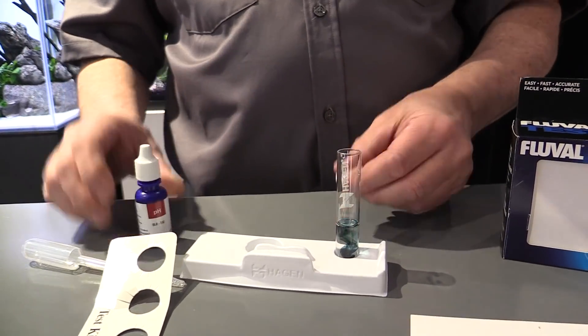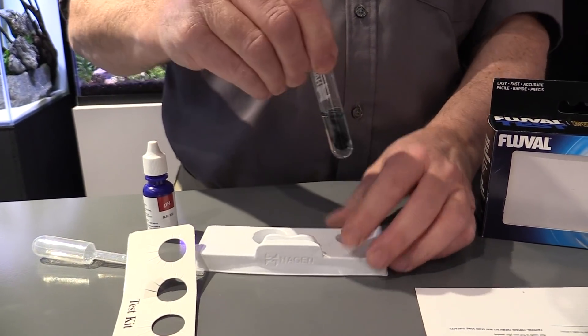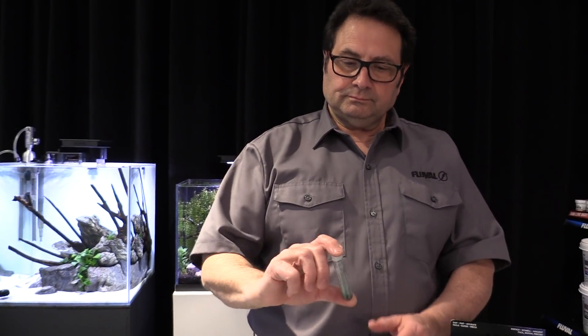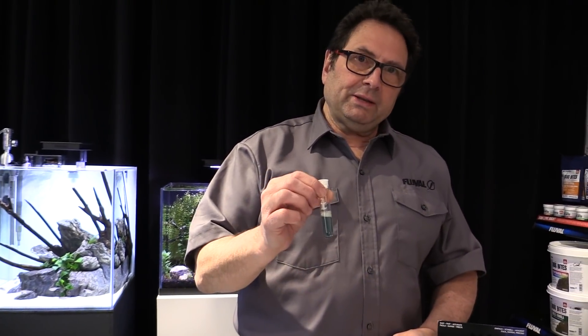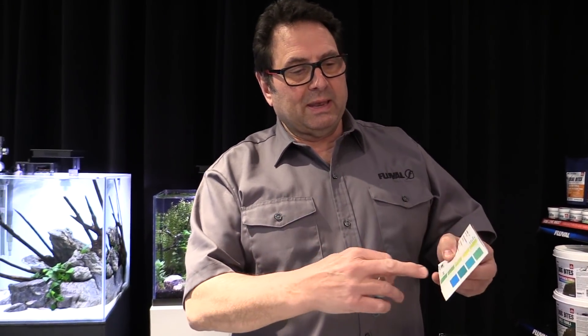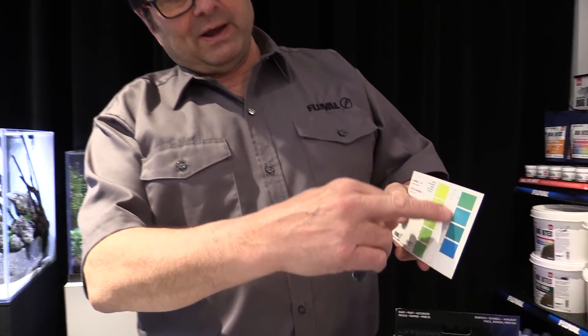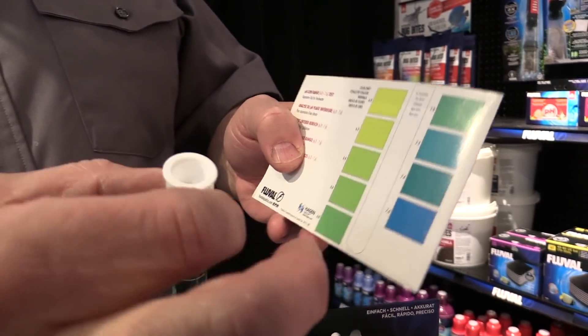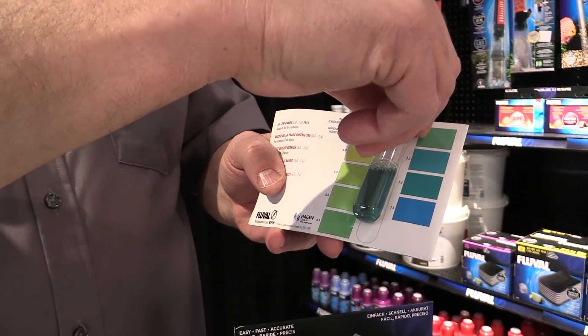Perfect. Then we're going to put the cover on the vial, give it a quick shake, and then when we're reading the result, what's really important is that you're going to put it up against this vial-shaped white area over here. So you're going to put the vial up against there like that and then match it up to the color beside.